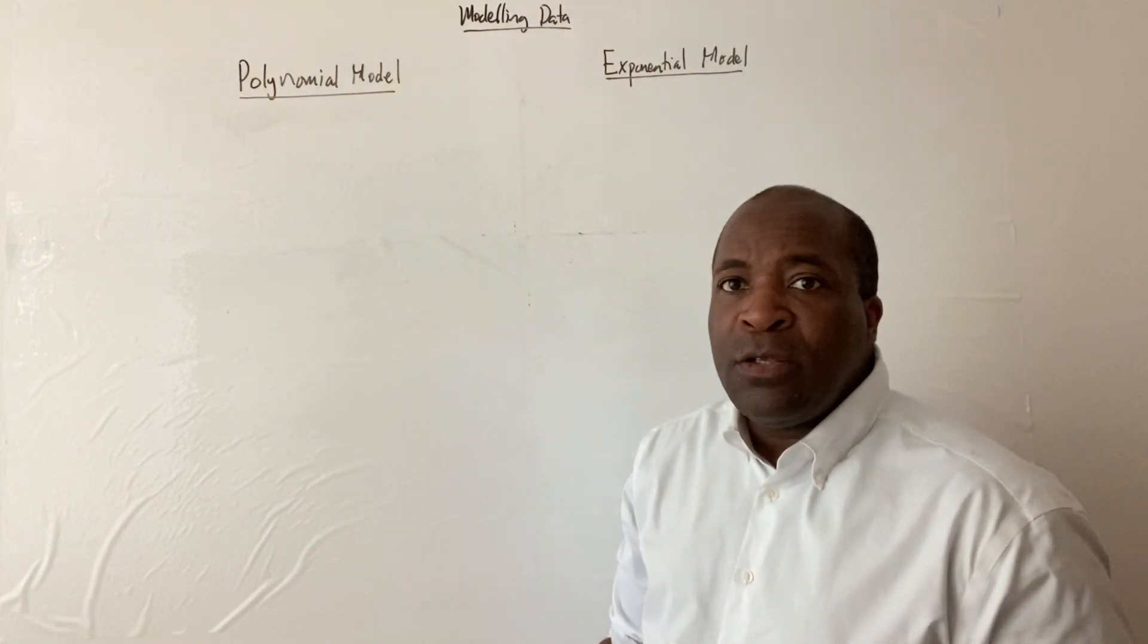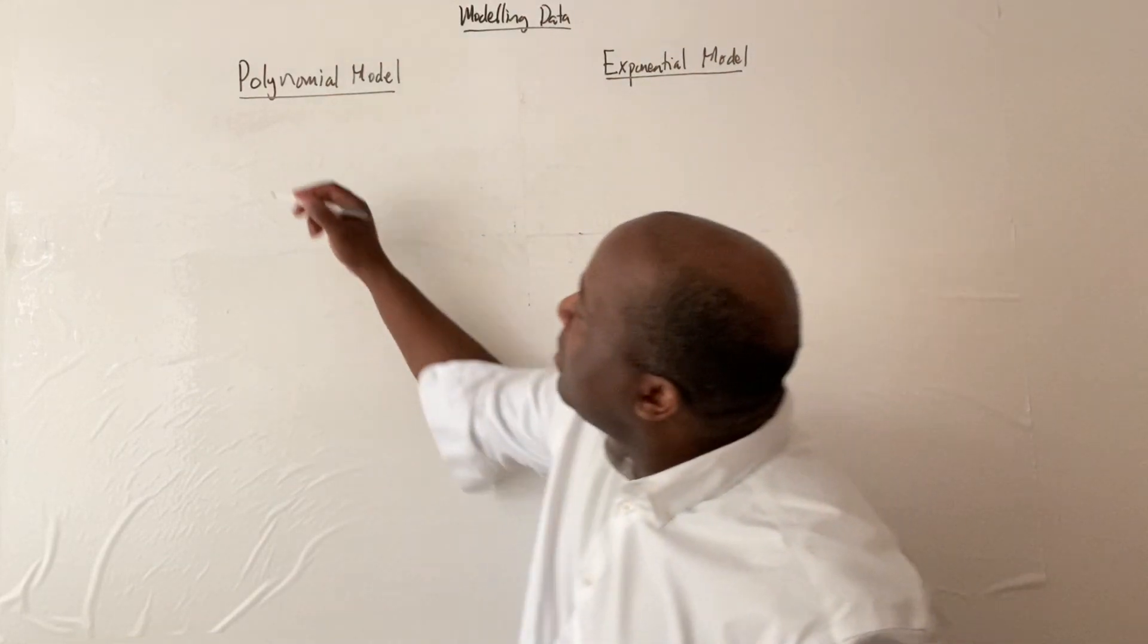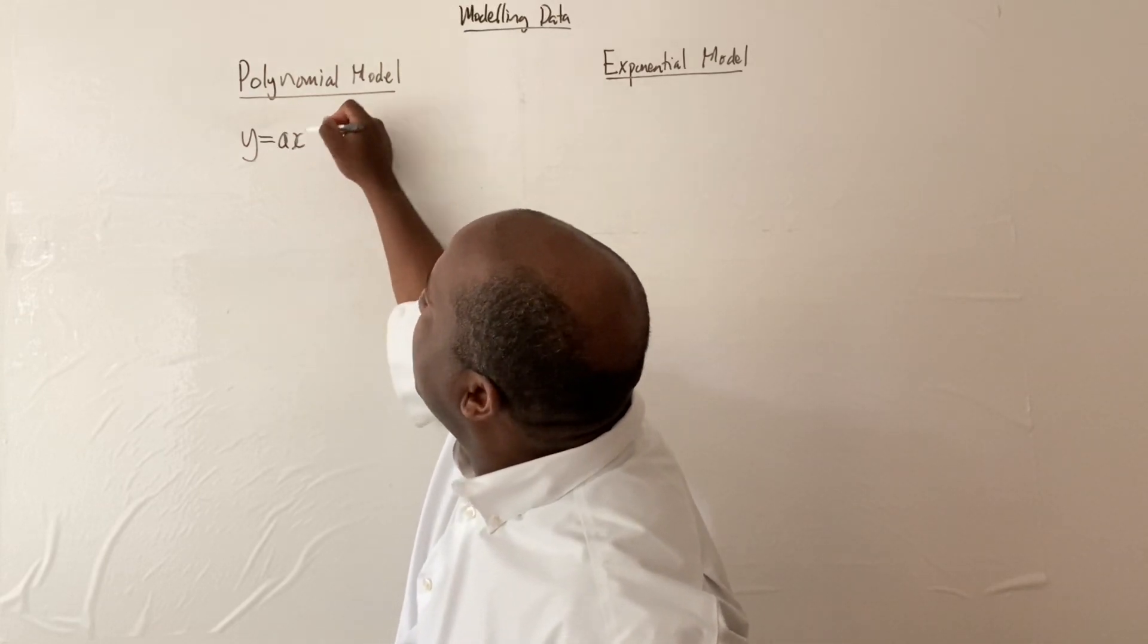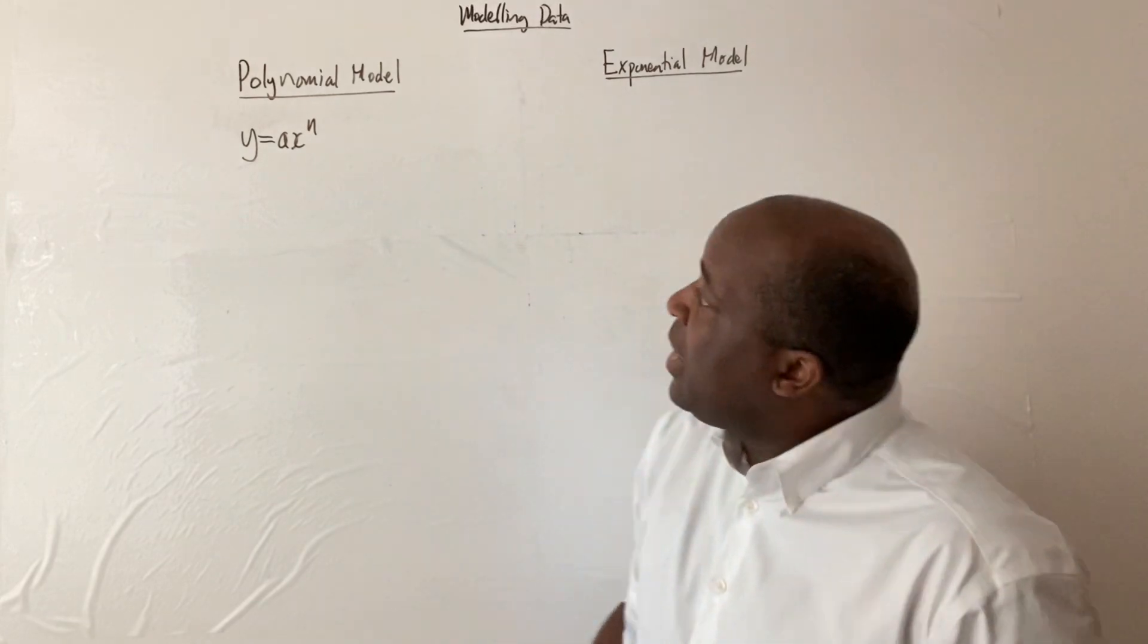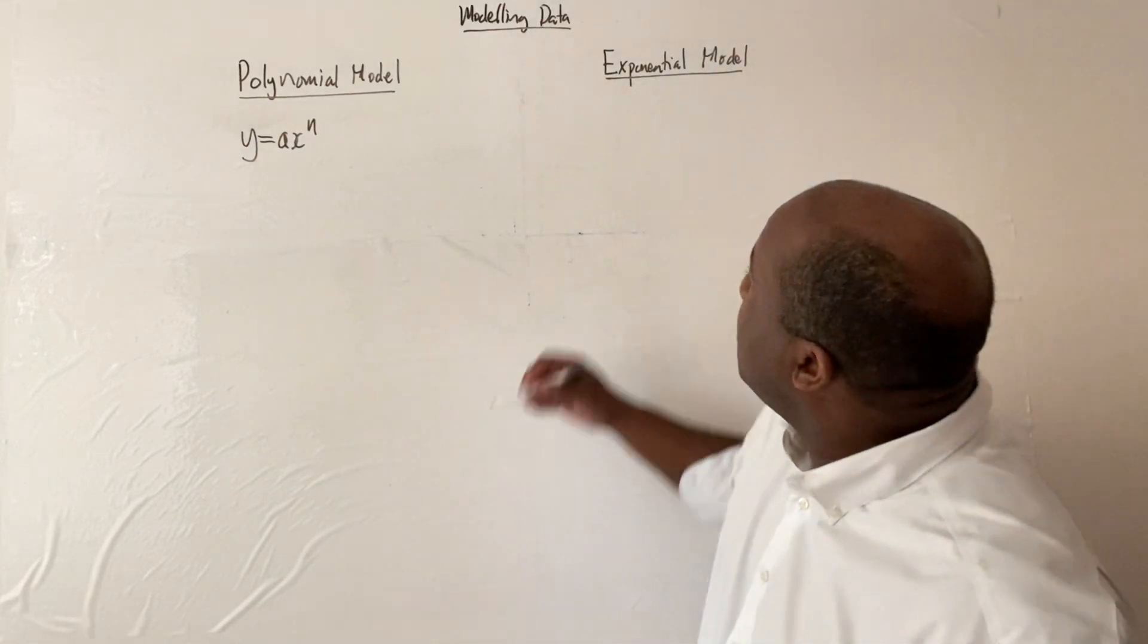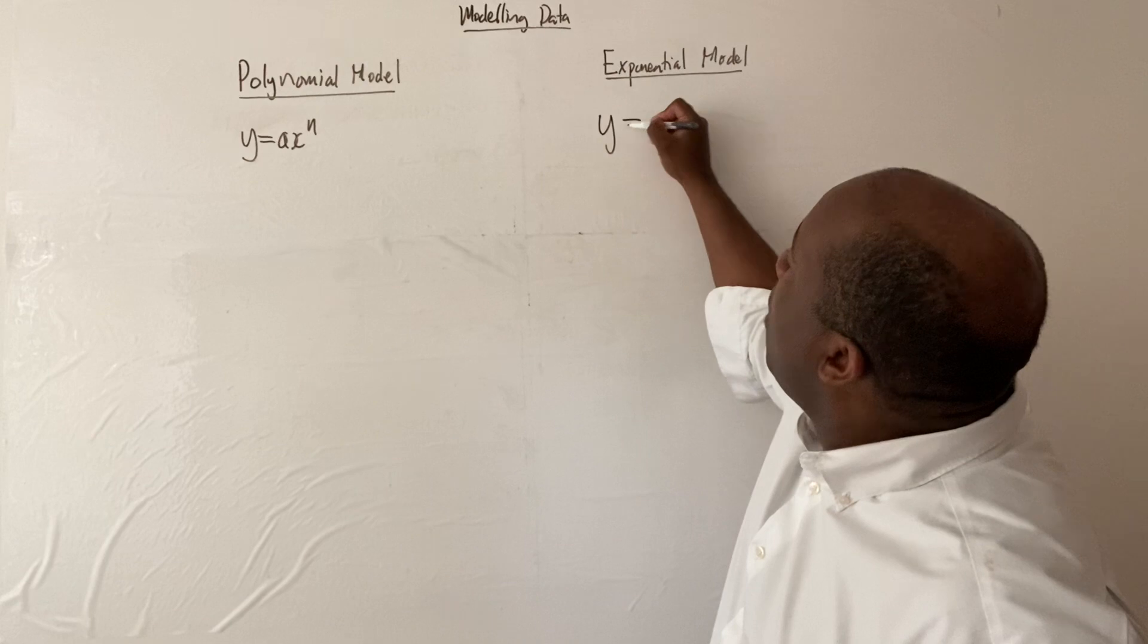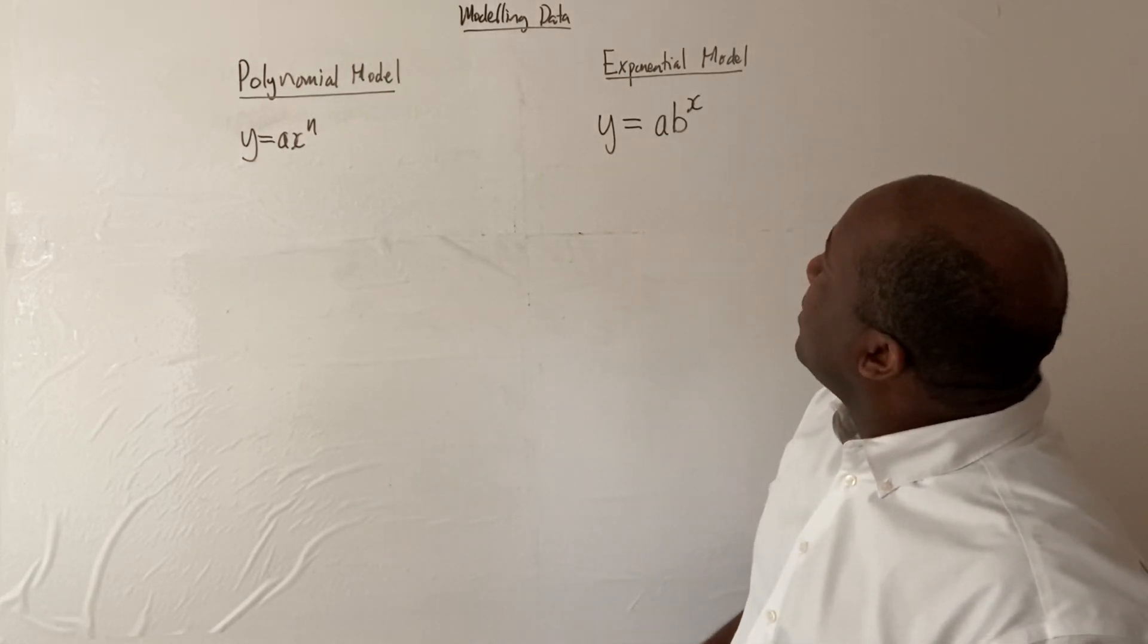We have at our disposal two different approaches. We have the polynomial model. The polynomial model is assuming that the data can be fitted with a curve of the form y equals ax to the n, and generally we'll be seeking to calculate a and n that best fits the data. The exponential model is anything of the form y equals ab to the x.